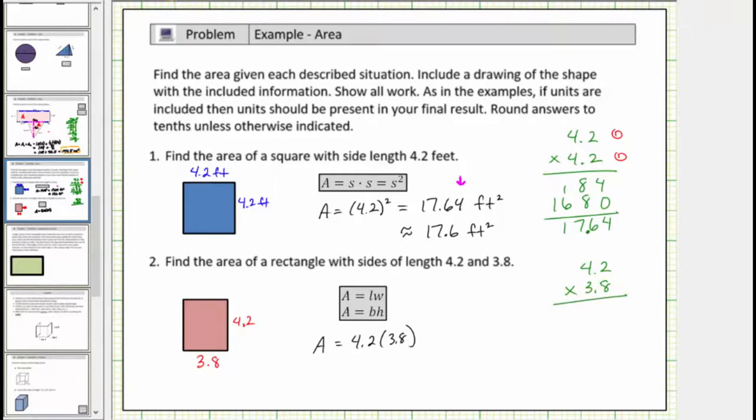Again, because this factor has one decimal place, and so does this one, the quotient must contain two decimal places. So first we multiply. Eight times two is sixteen. Perform an exchange with the one. Eight times four is thirty-two, plus one is thirty-three. Add a zero, and multiply by three. Three times two is six, and three times four is twelve.